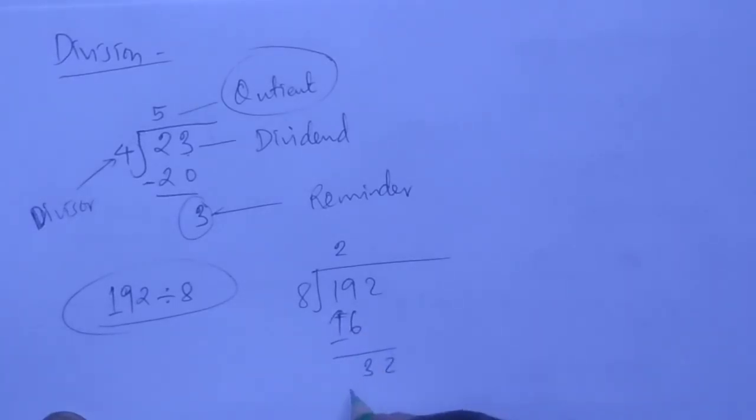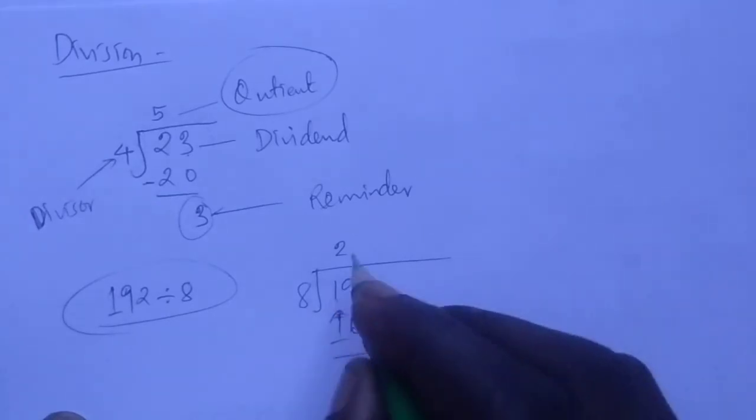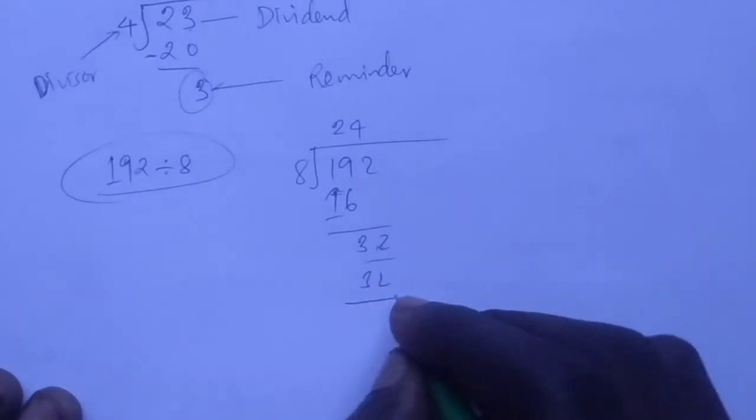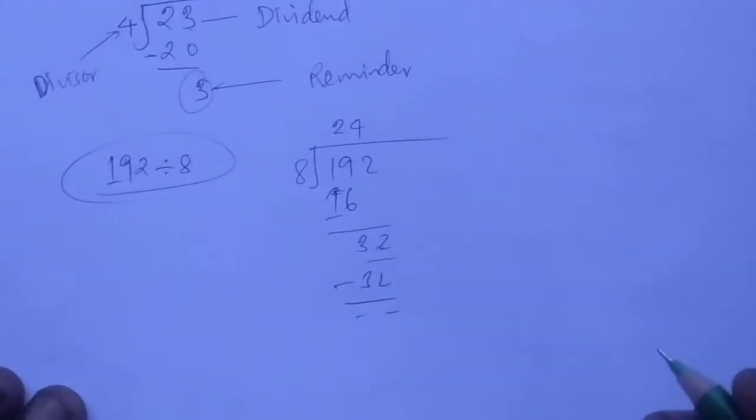We bring down the 2. Then 32 divided by 8 goes in 4 times. 4 times 8 equals 32. When we minus, our remainder is zero.